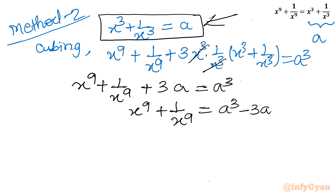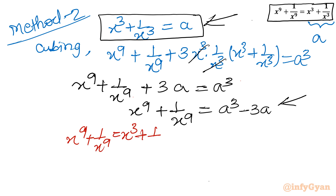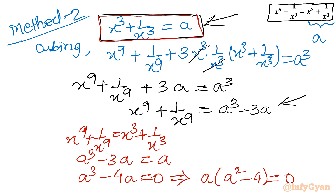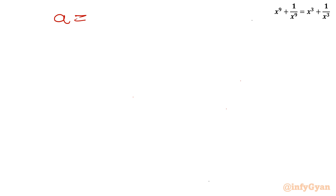So x³ + 1/x³ = a, and x⁹ + 1/x⁹ = a³ - 3a. Substituting into the original equation x⁹ + 1/x⁹ = x³ + 1/x³, we get a³ - 3a = a, which gives a³ - 4a = 0. Taking a common: a(a² - 4) = 0. So a = 0 or a² - 4 = 0.